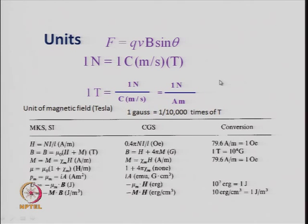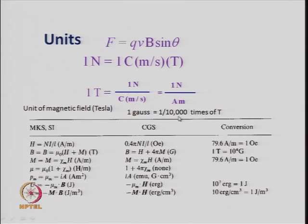Another very common unit of magnetic field, other than tesla, is the gauss, named after the famous mathematician Gauss. One gauss is a very small quantity whereas 1 tesla is a very big quantity. One gauss is 1/10,000 of a tesla, or equivalently 1 tesla equals 10,000 gauss. Tesla is the SI unit, as stated here.